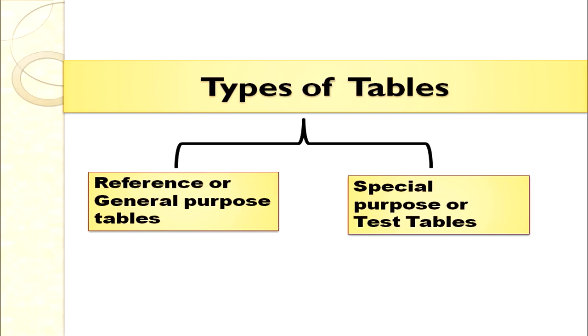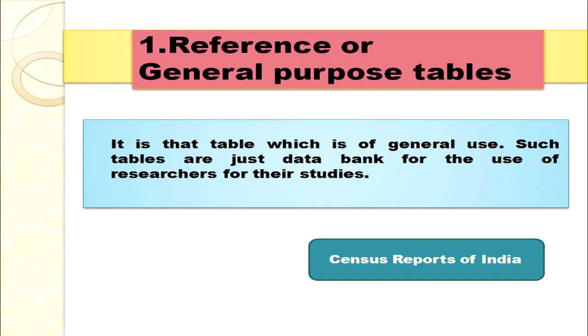Once we know the different parts of a table, we can discuss the different types of tables. There are two types: reference tables, popularly known as general purpose tables, and special purpose or text tables. A reference or general purpose table is one that contains a large amount of information — it is just a data bank for researchers. For example, census reports of India contain a lot of information regarding employment, income, number of members, and education.